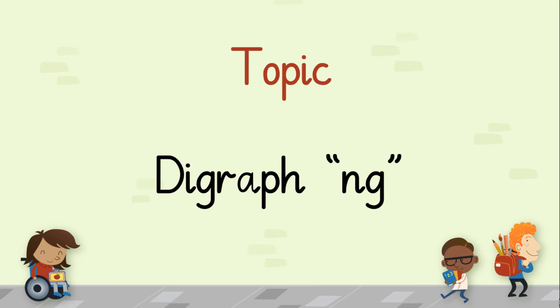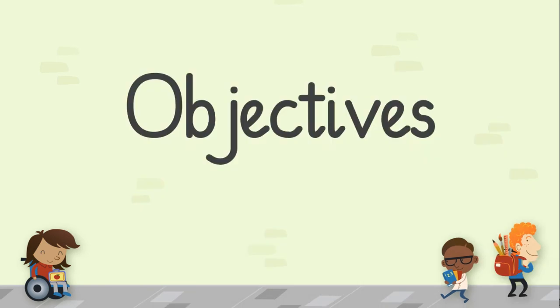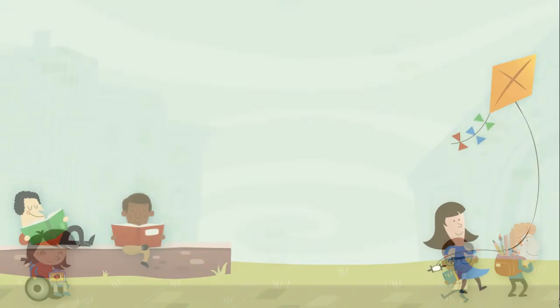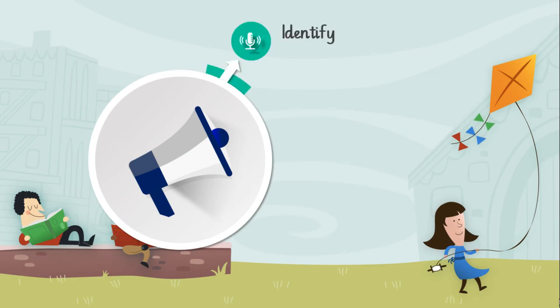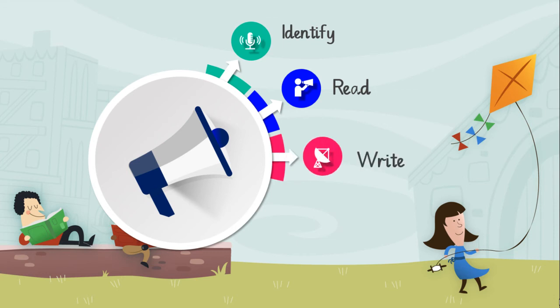First, we'll find out what is a digraph. A digraph is a combination of two letters representing one sound. N and G are two separate letters, but together their sound is NG. Now that we know that, let's go through today's objectives: to identify, read, and write NG digraph words.